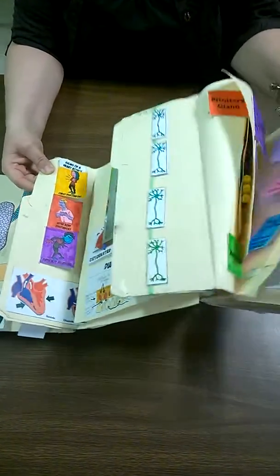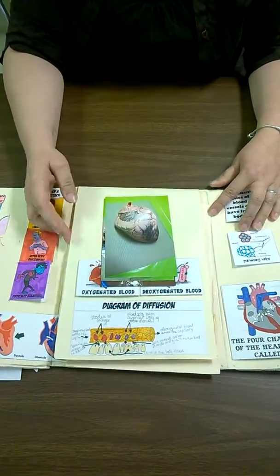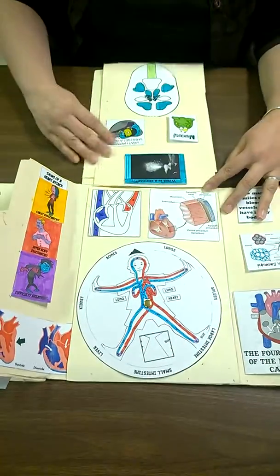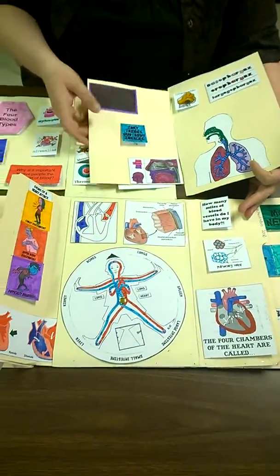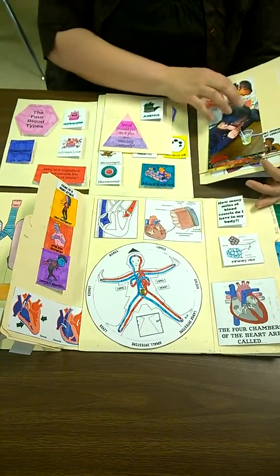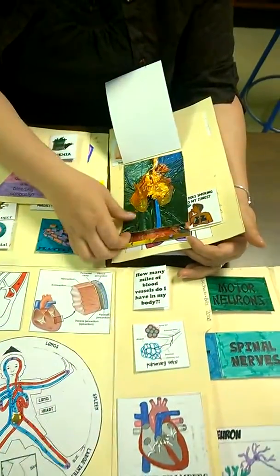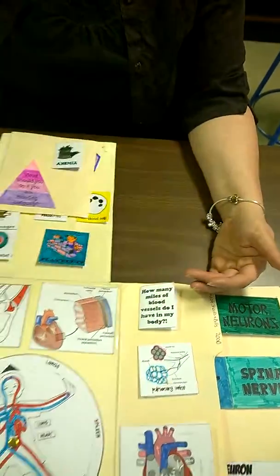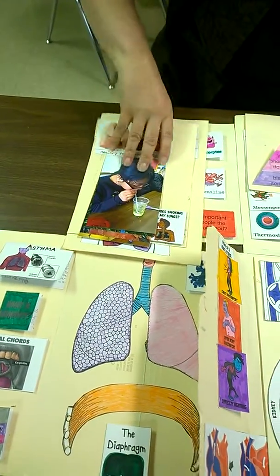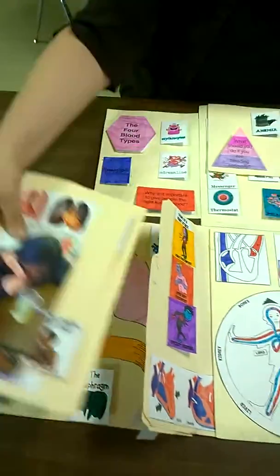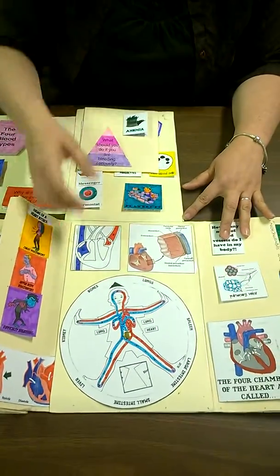Then we have the next part dealing with both the cardiac system and the blood as well. This one looks like it needs to be re-taped in there, and that's fine. We did a lot of activities. The lungs go over this way. Just tuck that in here, and she can tape that back in there.